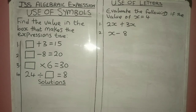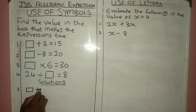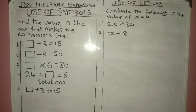Number one: box plus 3 equals 15. Number two: box minus 8 equals 20. Number three: box multiplied by 6 equals 30. And lastly, 24 divided by box equals 8. Let's get the solution to number one. We have box plus 3 equal to 15. What the question is saying is that we should find a number that when we put it in the box and add it to 3, it will give us 15.